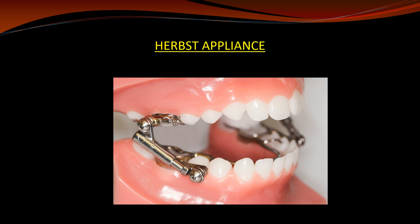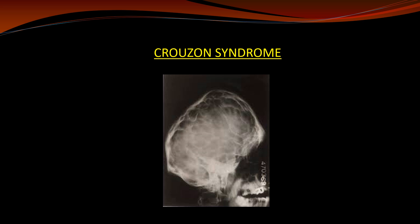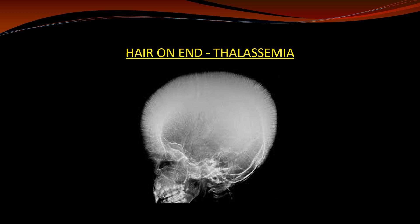The next question is Herbst appliances. Next question is gubernacular canal. There were also a few questions based on radiographic appearances. The first of these is Crossin syndrome — you can see the diagram, which shows the radiographic appearance. The next radiographic question is thalassemia.